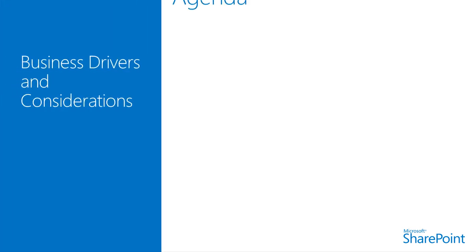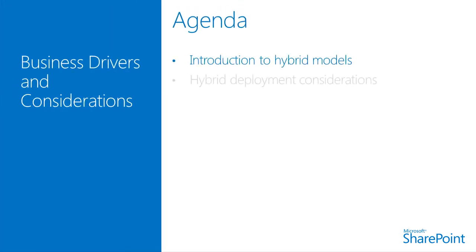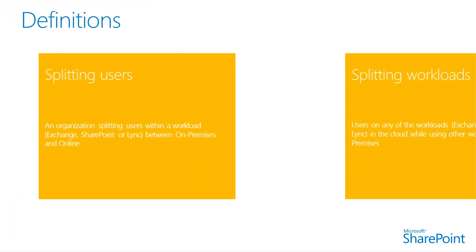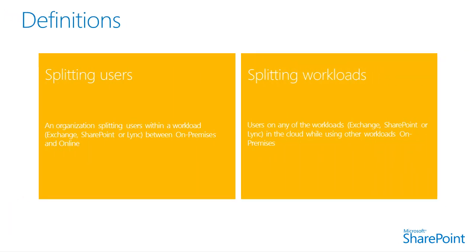Prior to deploying a hybrid environment with SharePoint Server 2013 and Office 365, you should have a basic understanding of hybrid models. Even if your enterprise is already familiar with some or all of the technologies involved, there are many configuration details that must be followed precisely for the deployment to succeed. Hybrid cloud is a composition of two or more clouds — private, community, or public — that remain distinct entities but are bound together, offering the benefits of multiple deployment models.